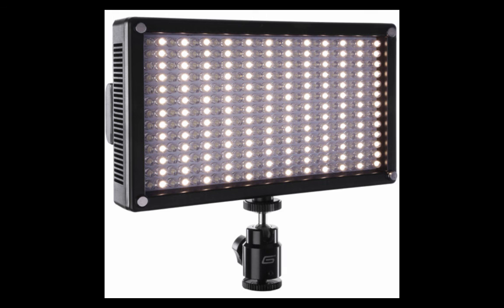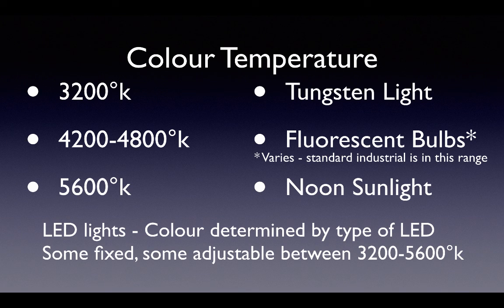The color of an LED light is determined by the type of LED in the light. Some are fixed at 5600 degrees Kelvin or 3200 degrees Kelvin, and some are adjustable between 3200 Kelvin and 5600 Kelvin.